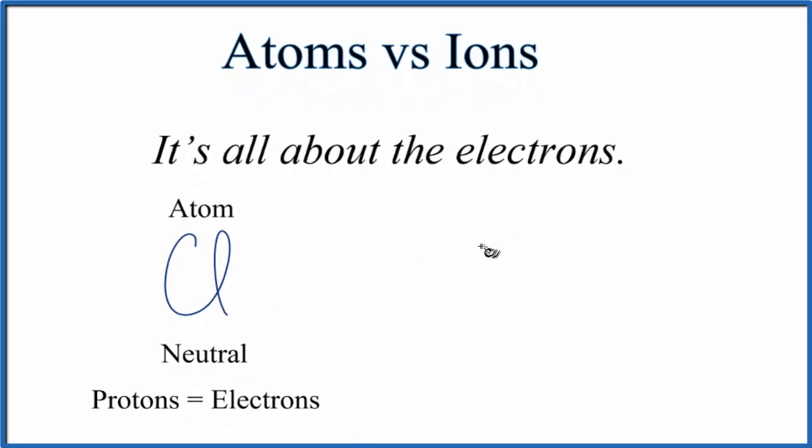But chlorine forms chemical bonds, and when it forms ionic bonds, it tends to gain an electron. Electrons are negative, so then we have this negative sign here. So now we consider this to be an ion. And with an ion, it's charged. It's not a neutral particle. It has a charge. It has a negative charge here because it has an extra electron.